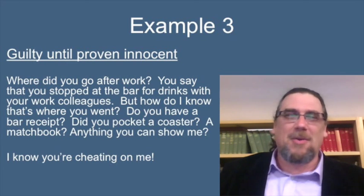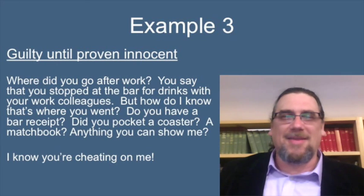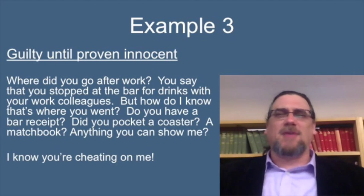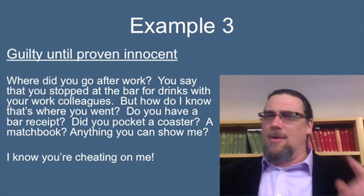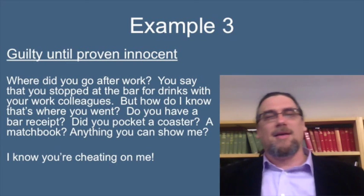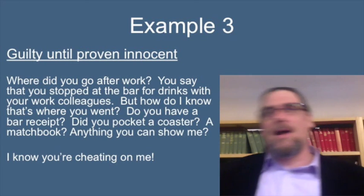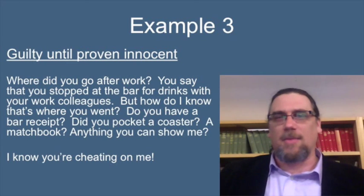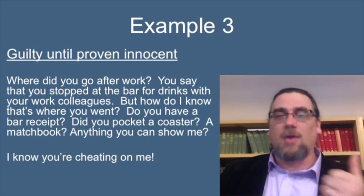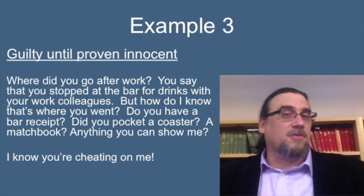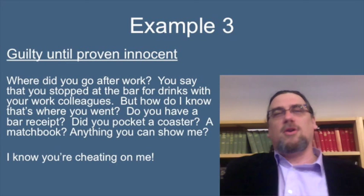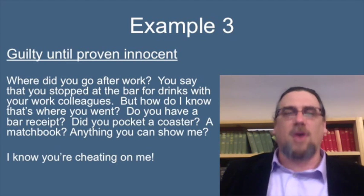Example three: a suspicious spouse. 'Where did you go after work? You say you stopped at the bar for drinks with work colleagues. How do I know that's where you went? Do you have a bar receipt, a coaster, a matchbook, anything you can show me?' And the conclusion: 'I know you're cheating on me.' Unless you can demonstrate you were actually at the bar — a receipt, a coaster, a selfie with the bar in the background — unless you give me proof, I'm going to assume you were cheating on me. That's an argument from ignorance.